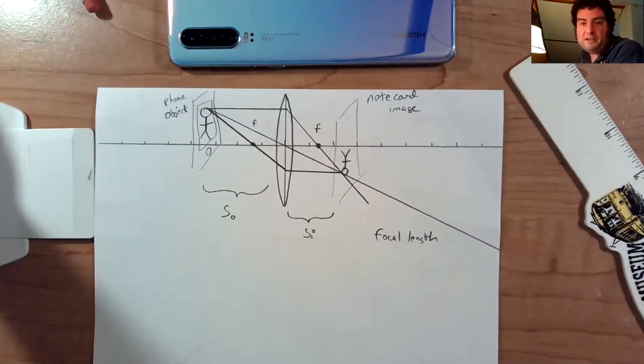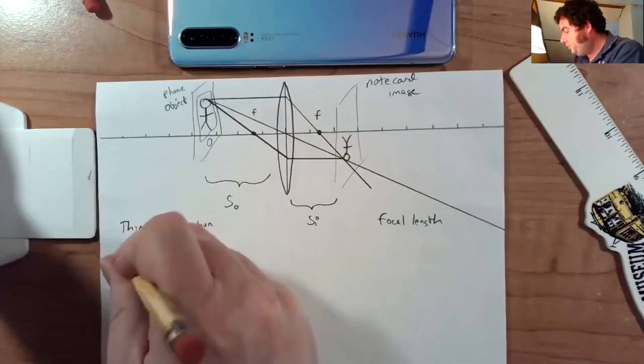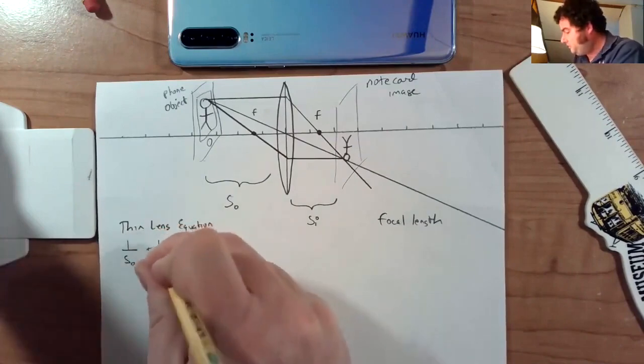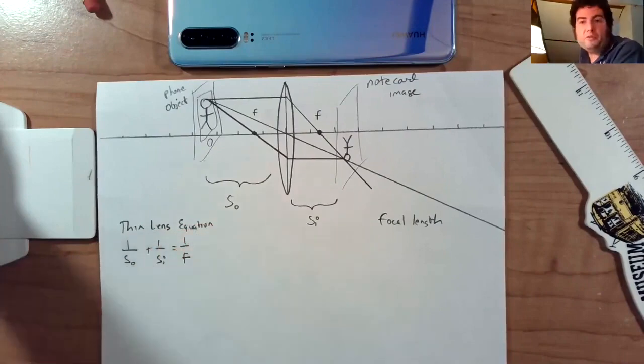People have studied optics for a long time. And the equation they've come up with is known as the thin lens equation. And then, one over the object distance plus one over the image distance equals one over the focal length.